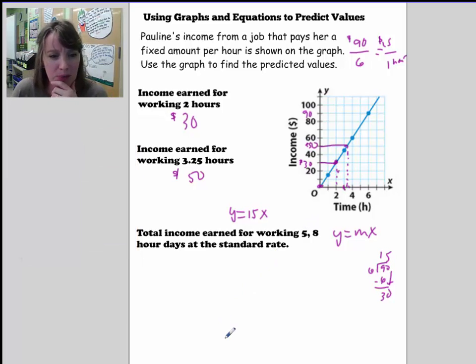There's a follow-up question here. The total income earned for working 5, 8-hour days at the standard rate. So she's working like Monday through Friday and 8 hours a day. So in order to do that, if it's 5 days times 8 hours per day, that's going to be a total of 40 hours.